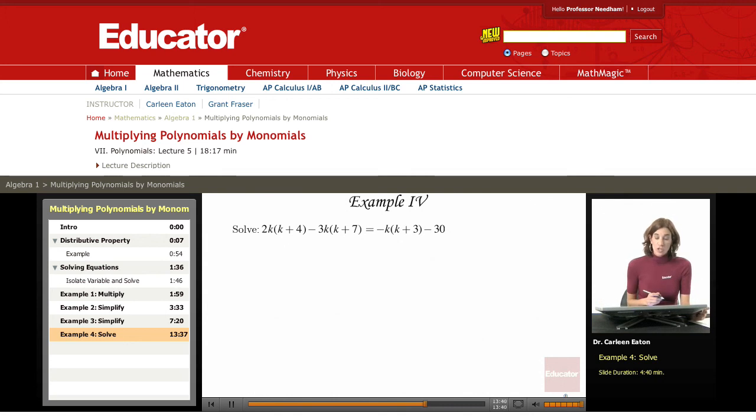This time I'm being asked to solve an equation. So this is a little bit different, and as usual, when I solve an equation, what I want to do is isolate the variable. So my goal is going to be to isolate k. But in order to do this, I'm going to use the rule that I just learned today about applying the distributive property to a monomial times a polynomial.